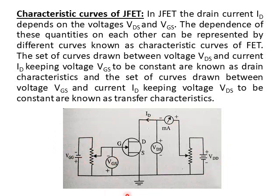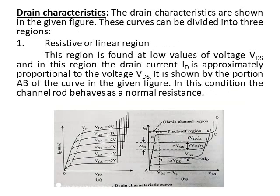In the circuit diagram, voltage VGG is applied and its value can be varied, so the voltage between gate and source is VGS. Similarly, voltage VDD is applied, and by varying it, the voltage between drain and source is VDS. By changing VDS and VGS, we can find the value of drain current ID.